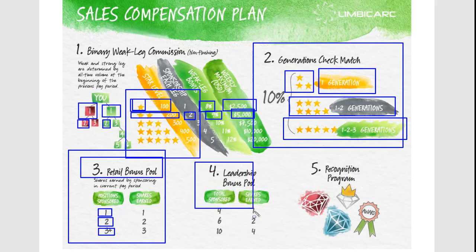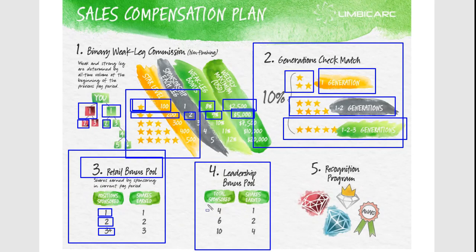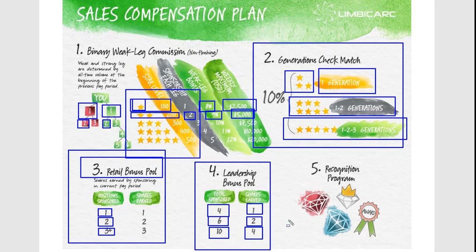There's also a leadership bonus pool. Remember in the retail bonus pool where it maxed out at three shares? Well this takes care of you. When you sponsor four people, you're going to get one share in the leadership bonus pool. When you personally sponsor six people, you get two shares. And when you sponsor 10 people — that's how you get to Star 500, five on each side — you get four shares in the leadership bonus pool.